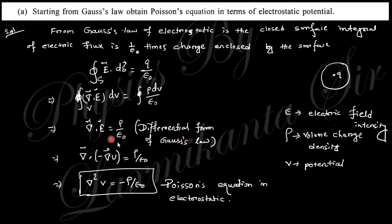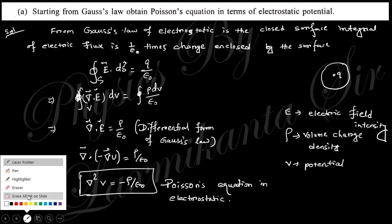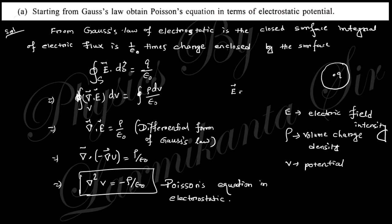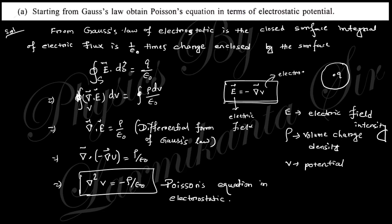Taking the divergence, and using the relation between electric field and potential — E equals minus grad V — if you substitute this, you get: div(grad V) = ∇²V = −ρ/ε. This is Poisson's equation in electrostatics. So I think the derivation of Poisson's equation from Gauss's law is clear.